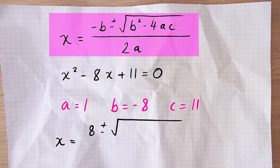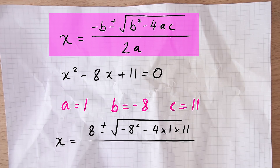So x equals 8 plus or minus the square root of b squared — that's negative 8 squared — minus 4ac, which means 4 times a times c, in our case 4 times 1 times 11, and then all of that over 2 times a, which in our case is 2 times 1, so just 2. We end up with 8 plus or minus the square root of negative 8 squared minus 4 times 1 times 11, all divided by 2.